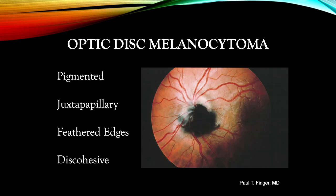Let's move on to another pigmented intraocular tumor: melanocytoma. These tend to be darkly pigmented, juxtapapillary, have feathered edges, and can be quite discohesive with vitreous cells. Though some can be brown, and others can display orange pigment on their surface, and others can undergo malignant transformation, there have been no reports of metastatic disease. Commonly associated with optic disc edema and vitreous seeds, the melanocytoma is a magnocellular nevus — a form of nevus.